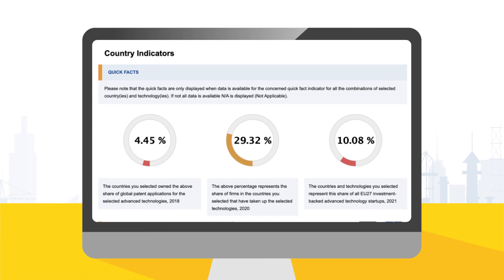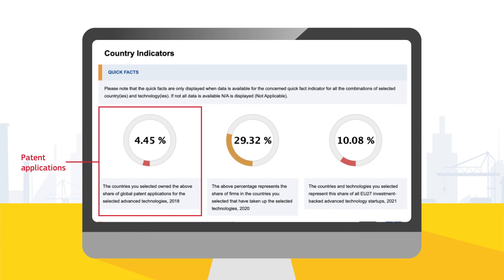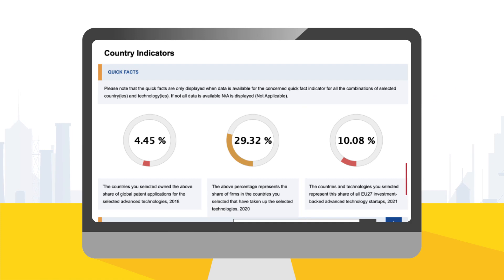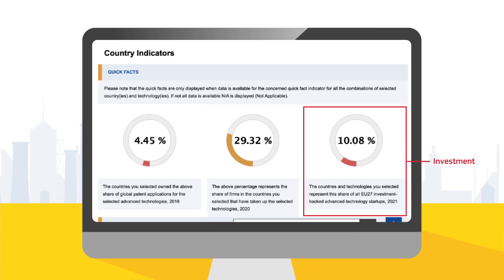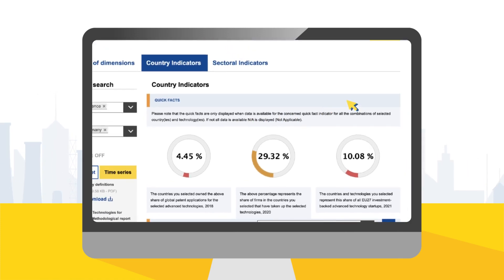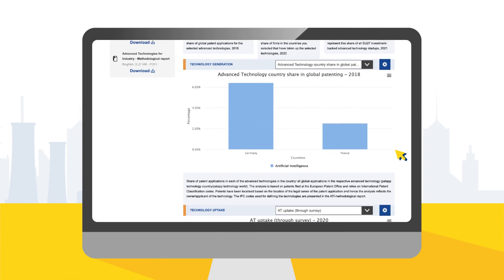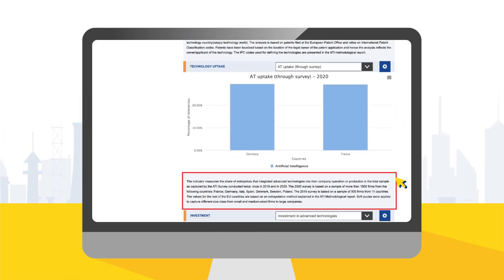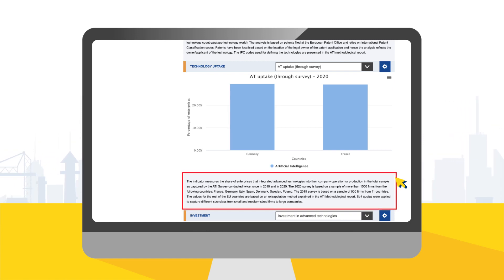Also new is that you will find three quick facts regarding your selection – one on patent applications, one about firms that have taken up the selected technologies, and one on investment. Below the quick facts, the different graphs are displayed for the dimensions.